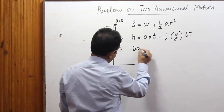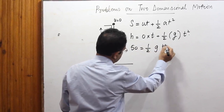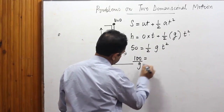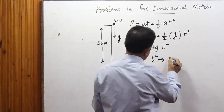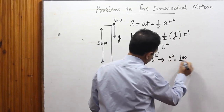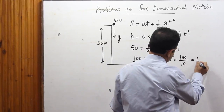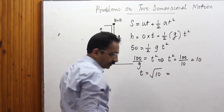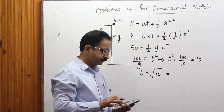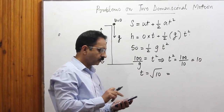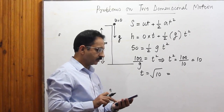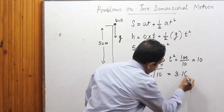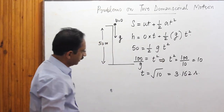From 50 = ½ g t², we get t² = 100/g = 100/10 = 10, therefore t = √10 ≈ 3.162 seconds. Now let's modify the problem — if we give this body a horizontal velocity when it is dropped, that horizontal velocity will not make any change in the vertical part of the motion. Two-dimensional motion is a combination of two independent one-dimensional motions.